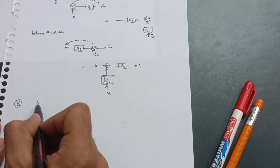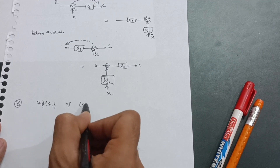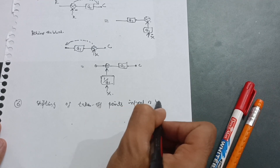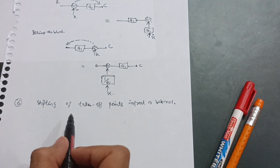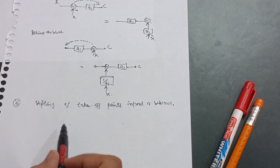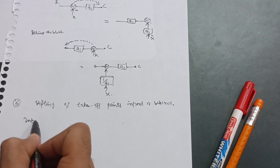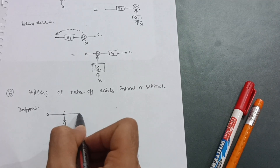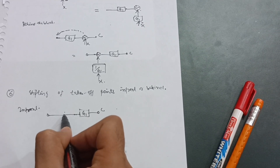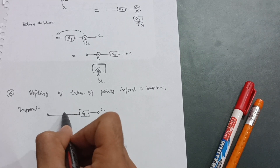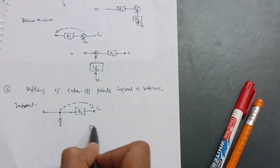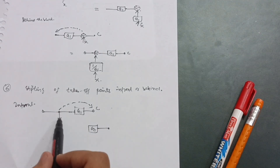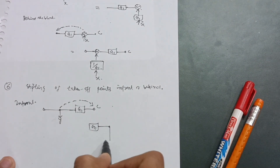The sixth rule is the shifting of takeoff points in front or behind the block. For the in-front case: suppose this is your input, this is the takeoff point, G1 is your block, and C is your output. When you shift the takeoff point in front of G1, you keep G1 as is, then add the inverse value 1/G1 with the takeoff point.